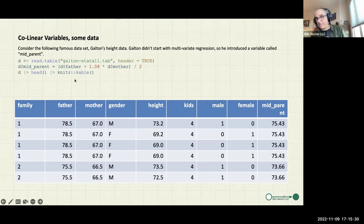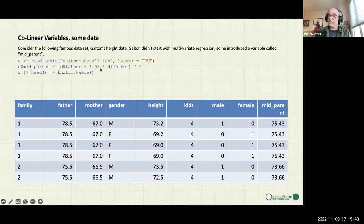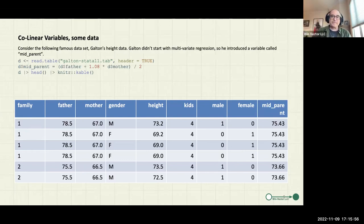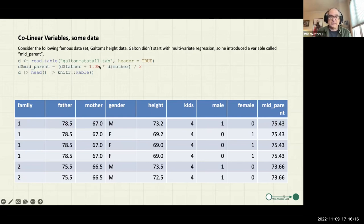Since Galton didn't have multilinear regression code, he reduced it to one variable by creating the mid-parent height — the average of the father's and mother's heights, inflated by eight percent. I think what he's doing is rescaling the women in his dataset, who are probably around eight percent shorter than the men, to be in the same height spectrum as the men. Mid-parent height is a collinear variable: once you know father and mother, you know mid-parent height. So no standard linear regression can work with all three variables present.